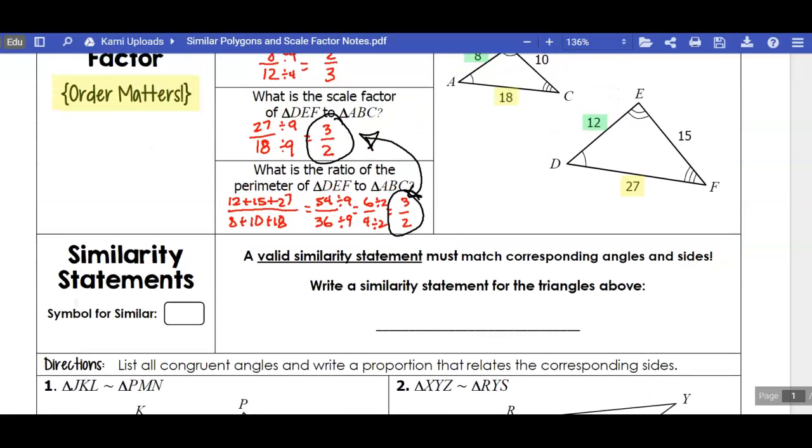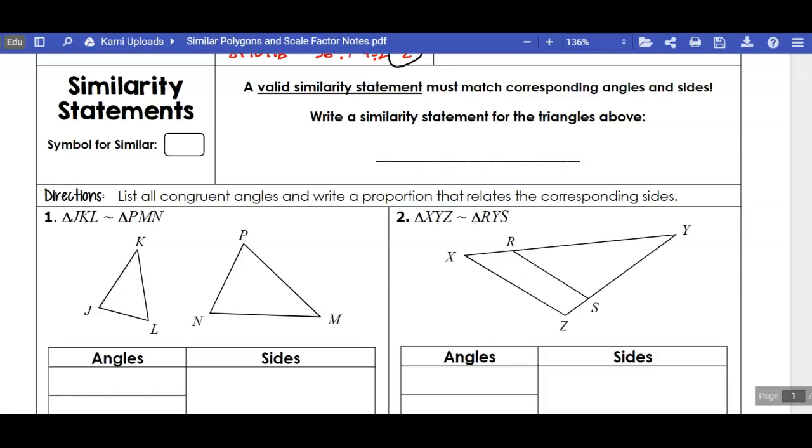We ended off talking about scale factor, so let's continue talking about similarity statements. We have a symbol for congruency—it's an equal sign with a squiggle on the top. For similarity statements, we're just going to take part of that symbol, the top part. When you see that symbol in geometry, you want to think similar.